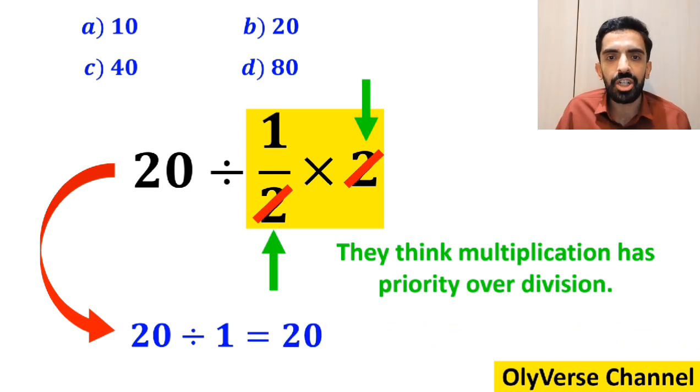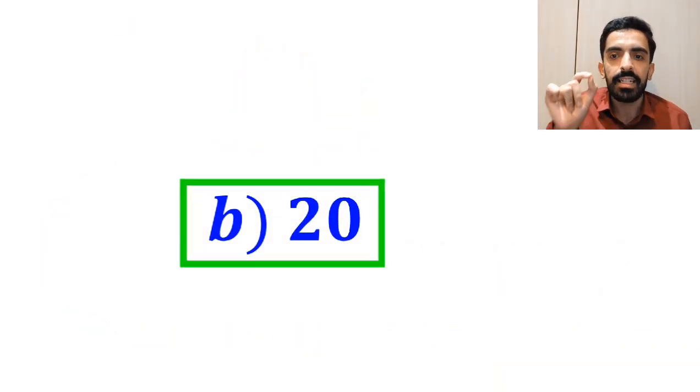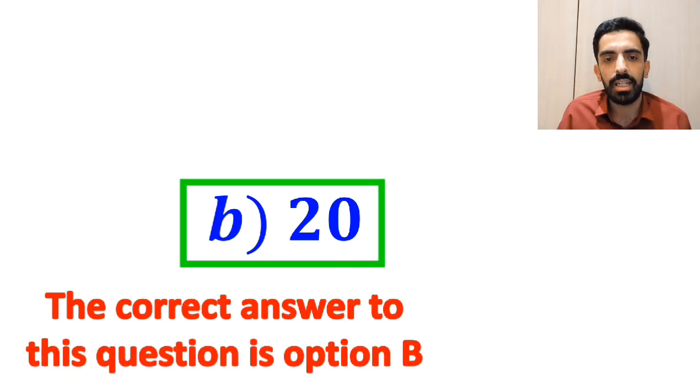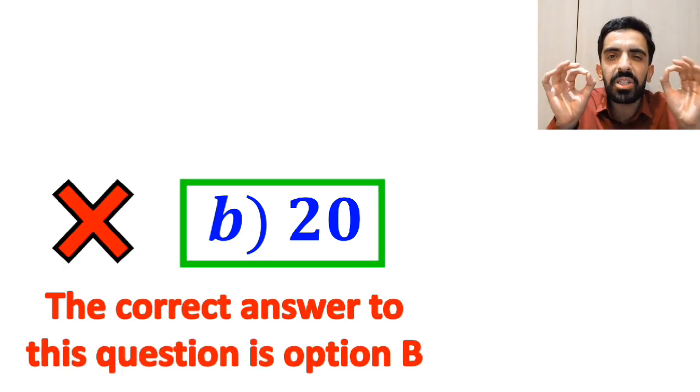Then, without any hesitation, they immediately say that the correct answer to this question is option B. But this answer is absolutely wrong.